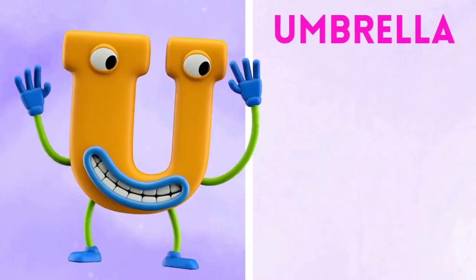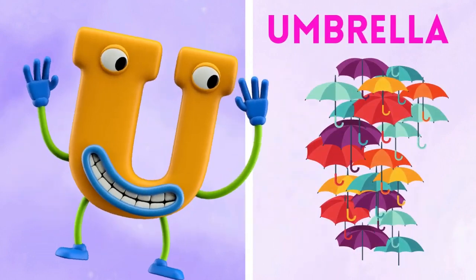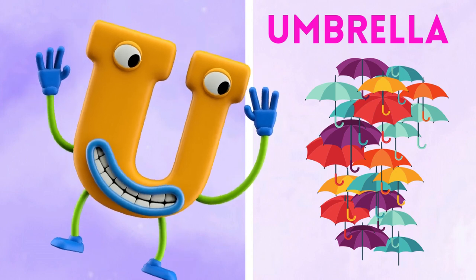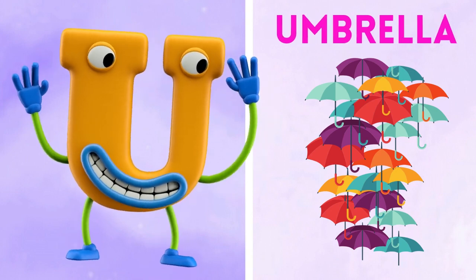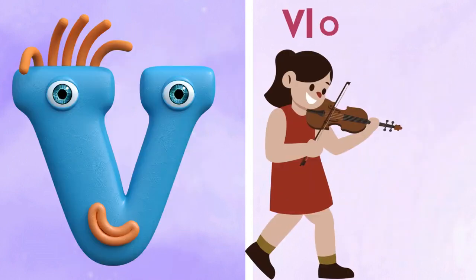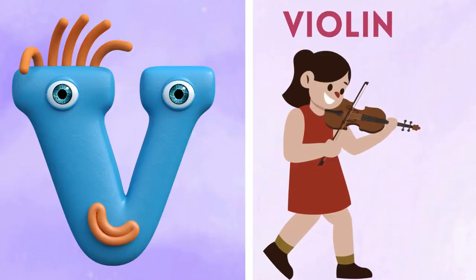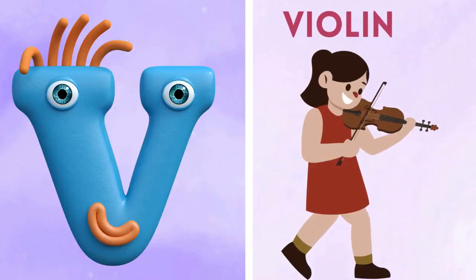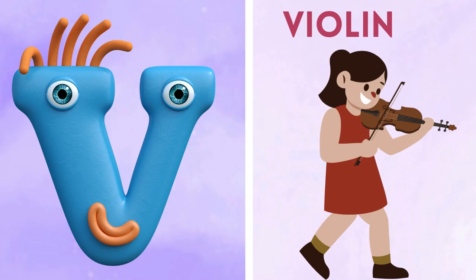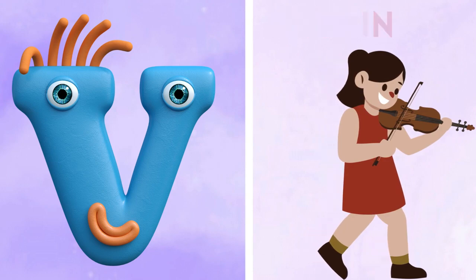U is for umbrella, u-u-u-umbrella. V is for violin, v-v-violin.